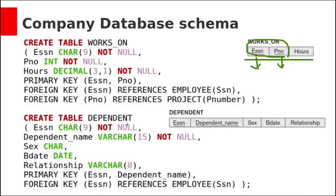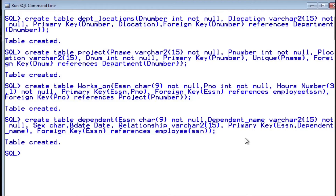The last table is the dependent table. It has five columns: ESSN, dependent name, gender, birth date, and relationship. ESSN is of character type, not null. Dependent name is varchar type, not null. Gender is character type. Birth date is date type. Relationship is character type. The composite primary key is the combination of ESSN and dependent name. Foreign key ESSN references employee(SSN). Dependent table created.